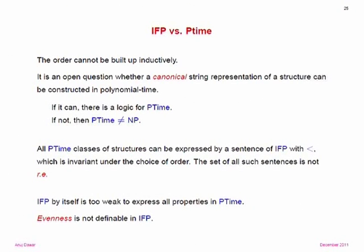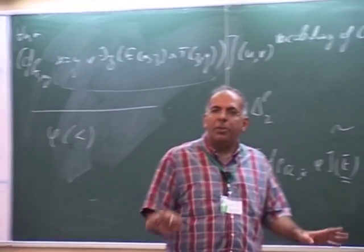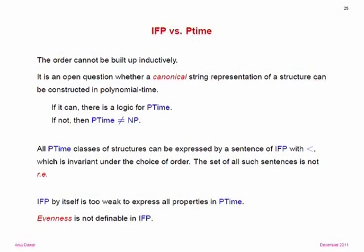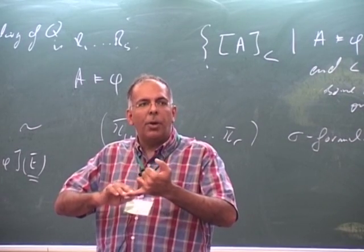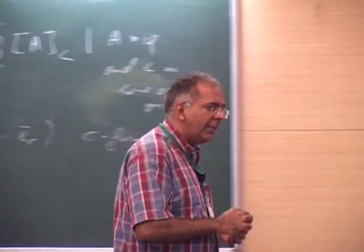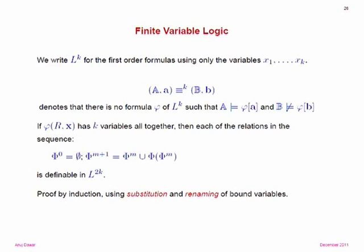To prove that evenness is not definable in IFP, we look at finite variable logics. Ramanujam referred to the width of a formula as the maximum number of free variables in any sub-formula. If a formula has width k, we can rename bound variables so only x1 to xk are used — re-quantifying the same variable repeatedly. I write L^k for those formulas using only variables x1 to xk (possibly reused), which is exactly the set of first-order formulas of width at most k.